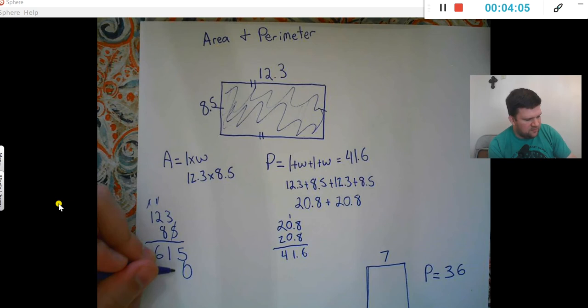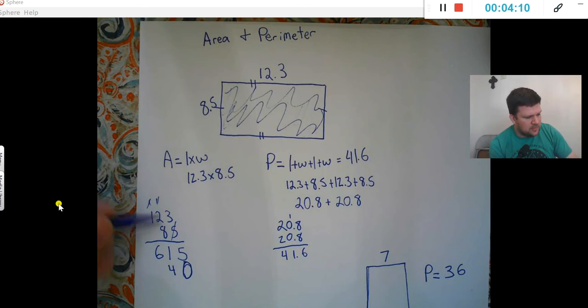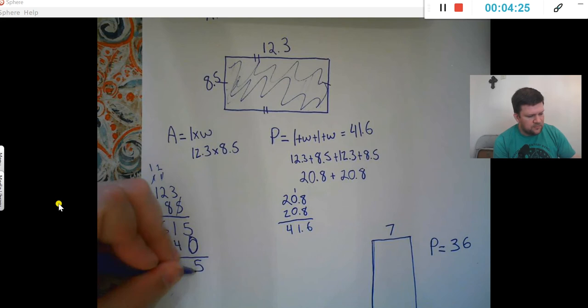8 times 3 is 24, carry 2. 8 times 2 is 16, 18. 8 times 1 is 8, 9. Now I add those together.